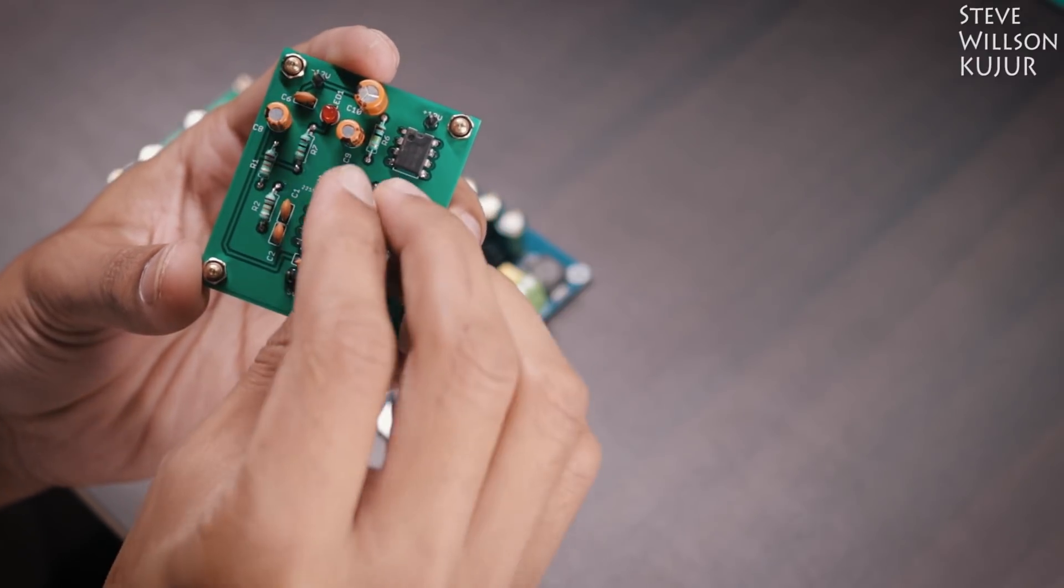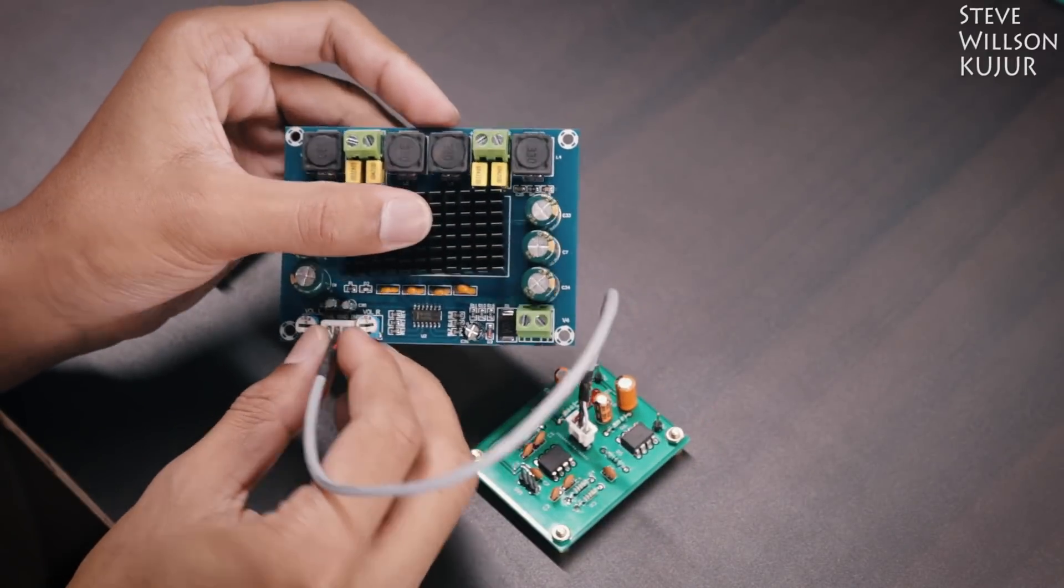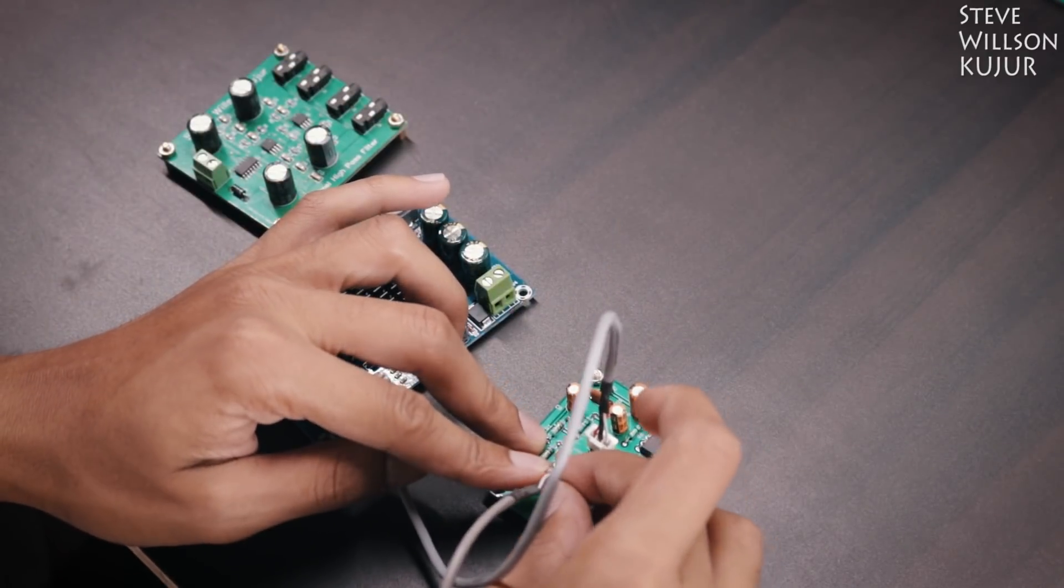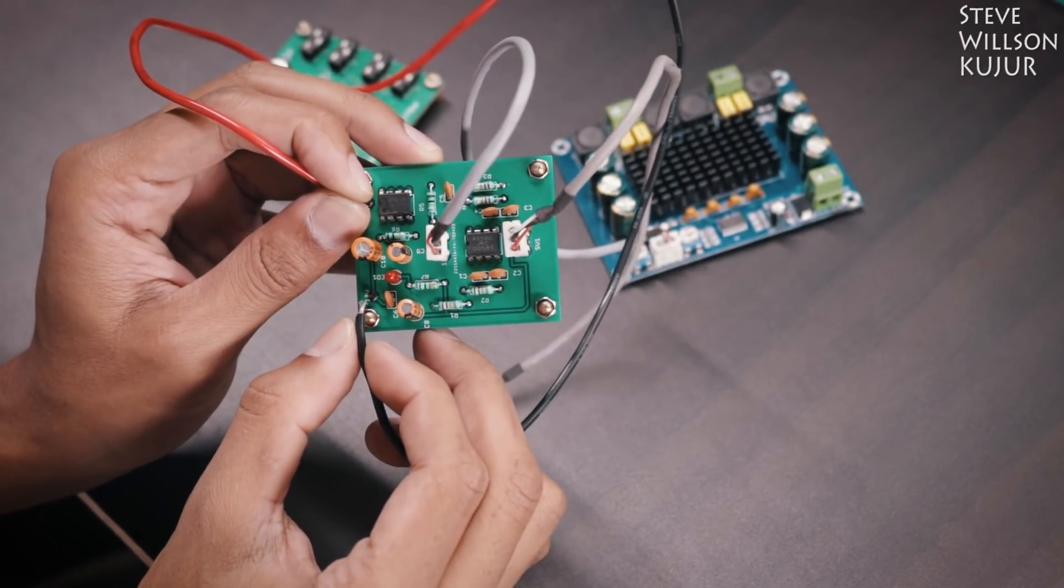Let's see how to connect this. The output of high pass filter will go to input of the amplifier and then input of the high pass filter will go to any music source. And this board needs 12V power supply.